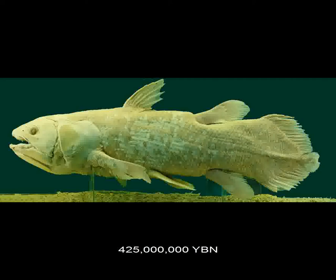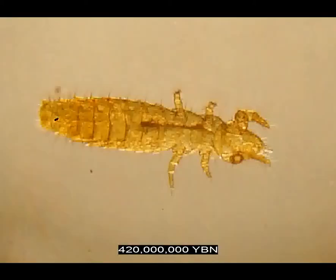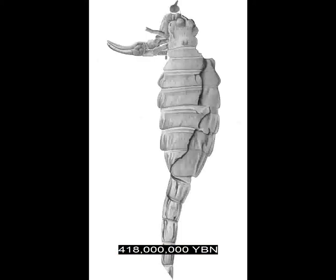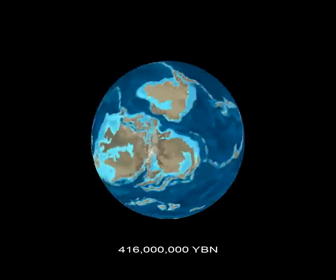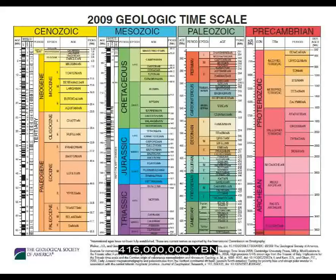The jawed fishes lobe-finned fishes evolve—with a fleshy lobe at the base of each fin. The arthropods hexapods—arthropods with six legs, three pairs—are the ancestor of all insects. The chelicerata arachnids evolve—ancestor of all scorpions, spiders, mites, and ticks. The lobe-finned fishes lungfishes evolve. The end of the Silurian and start of the Devonian period.